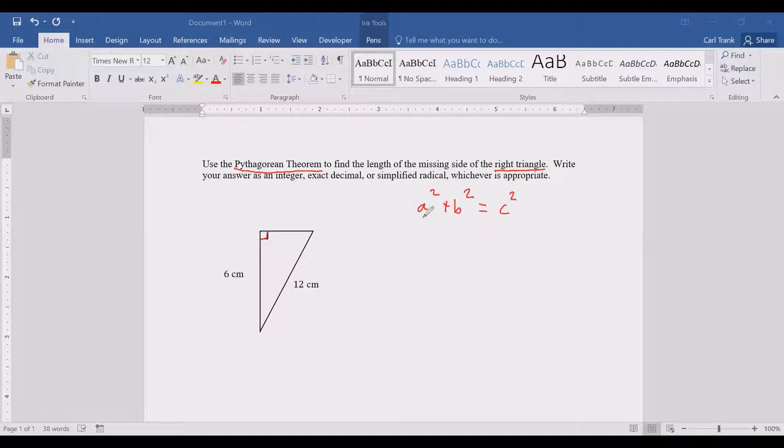A and B are the legs of the triangle. So another way that we could write this Pythagorean Theorem is leg squared plus the other leg squared equals the hypotenuse squared.